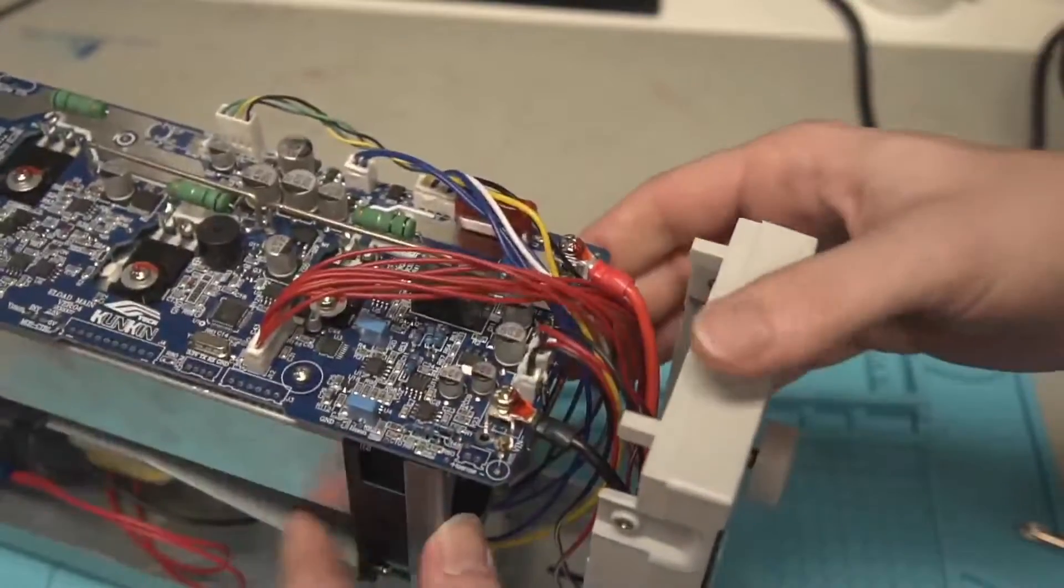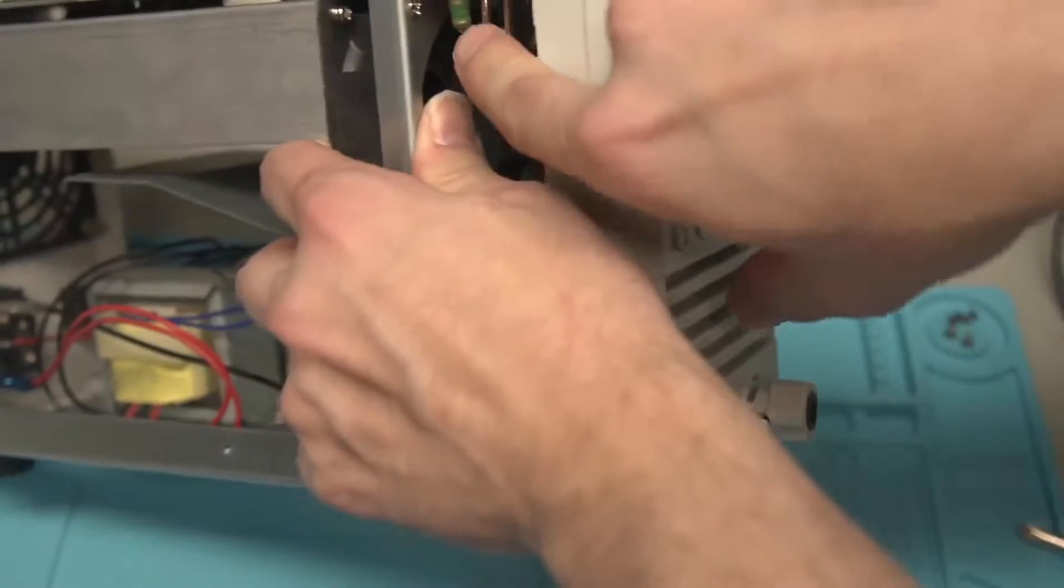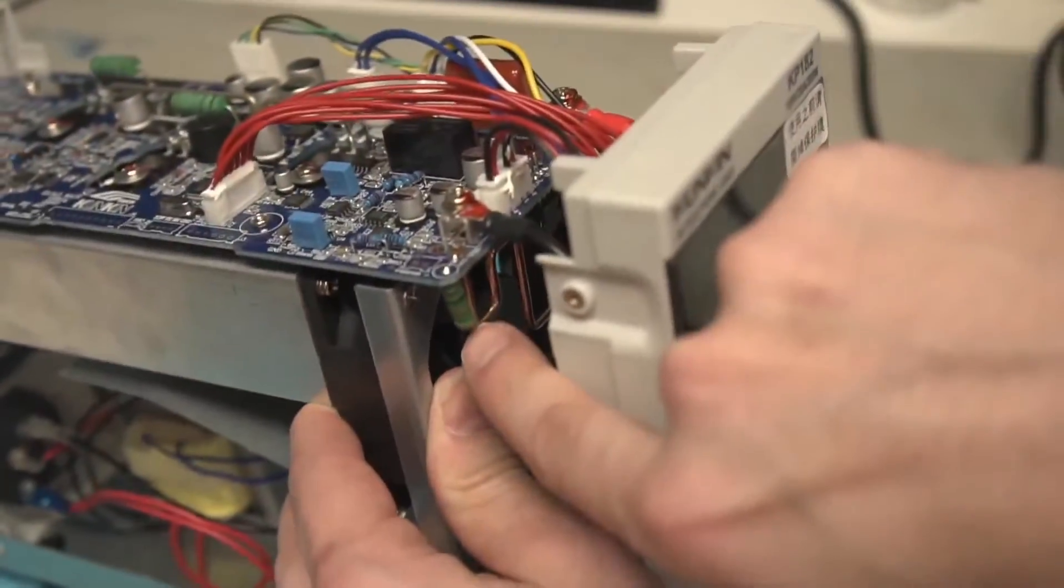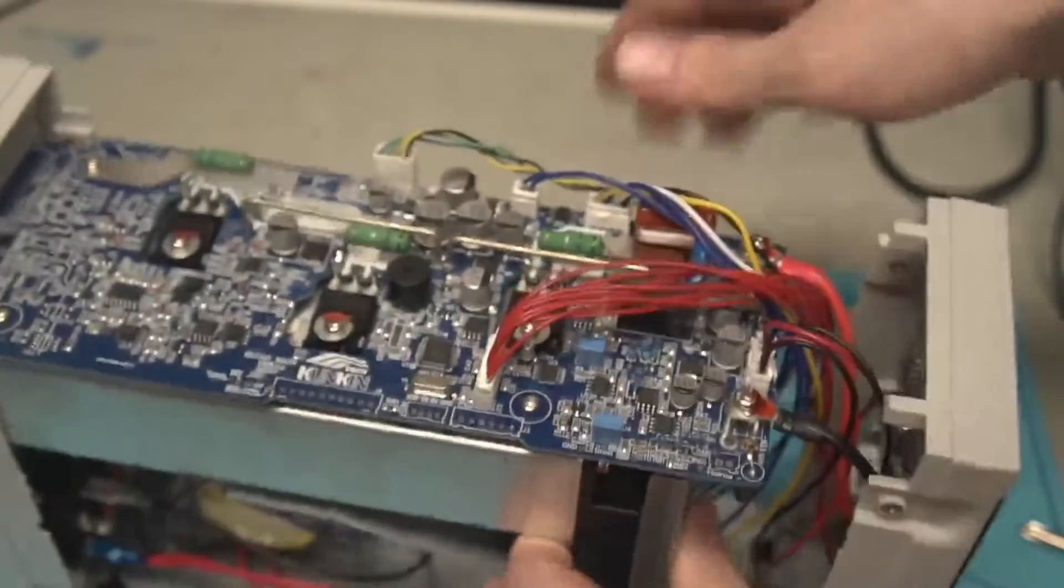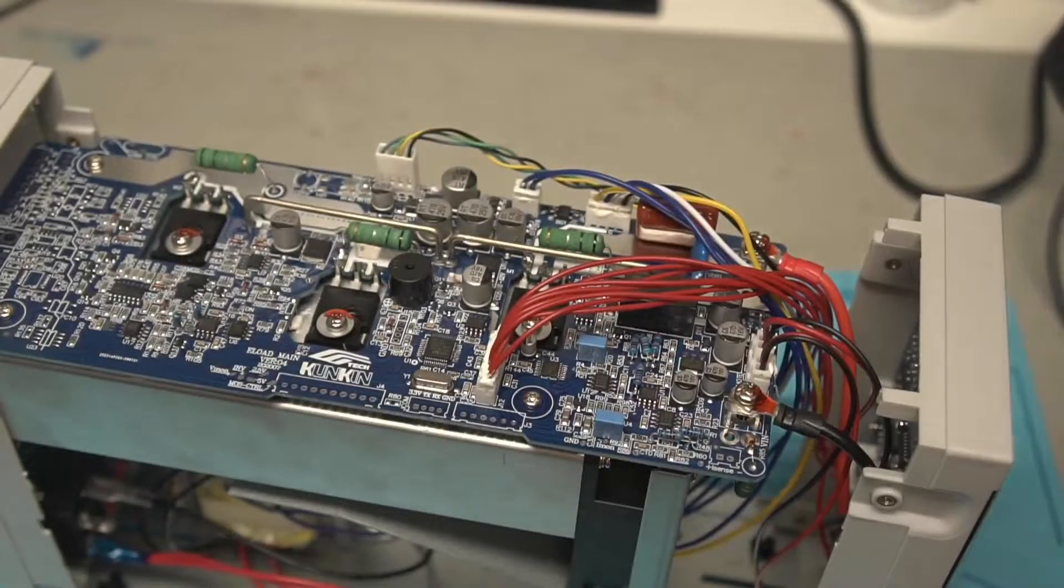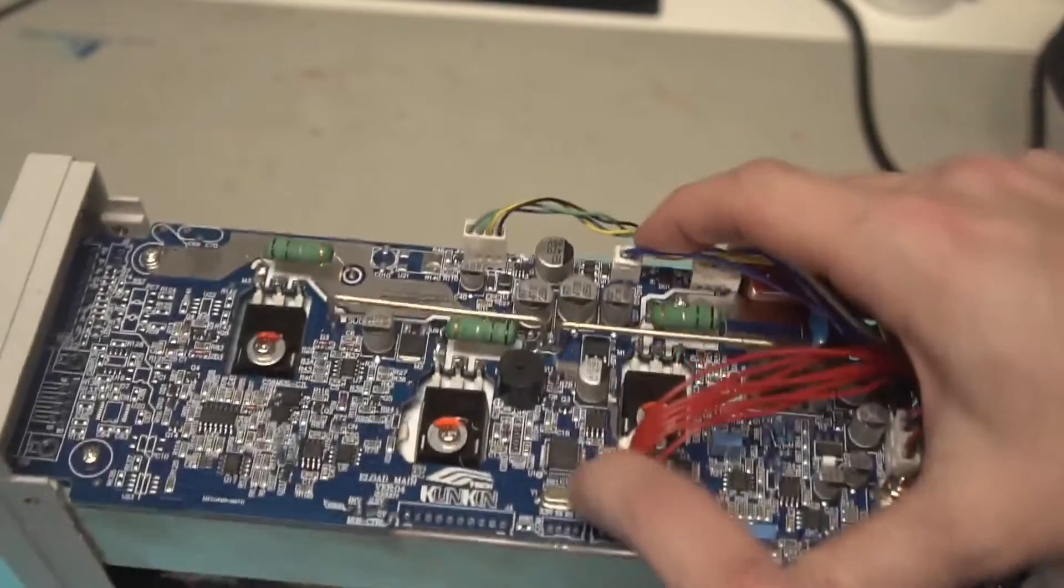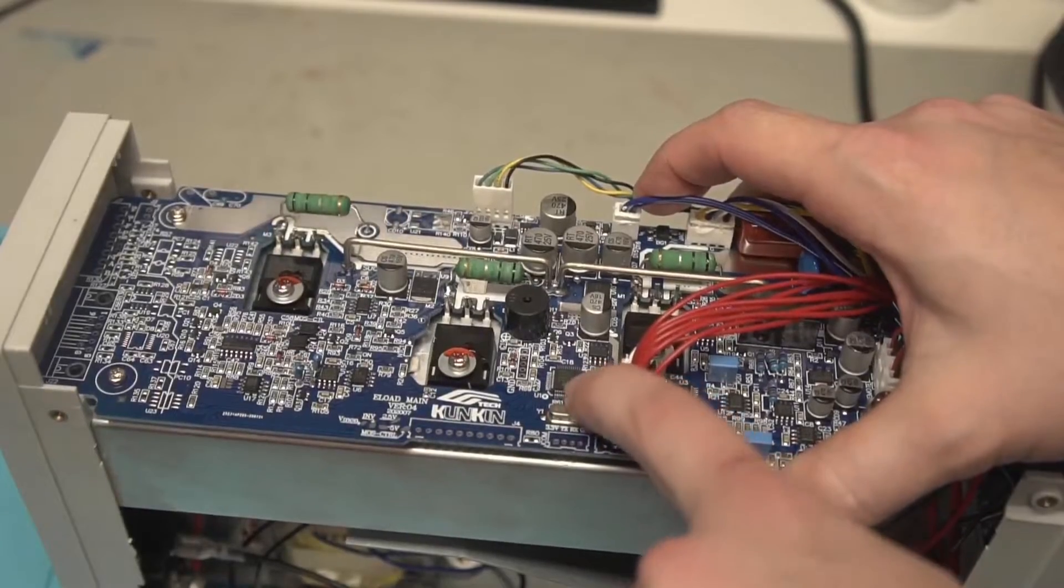On the 400 watt version, all of that would be populated. You would also have a second one of these current shunts, like this right here. So that way it can do the current sensing for that. It probably has a different version of the firmware on there, which this is just a STM32.